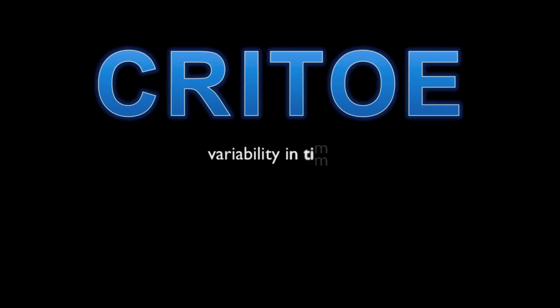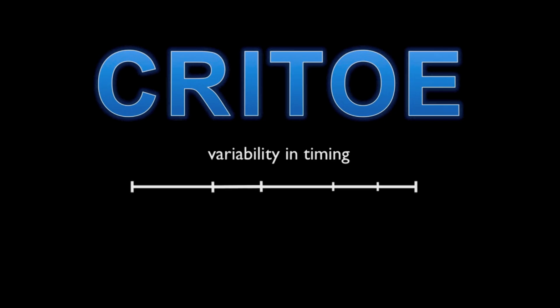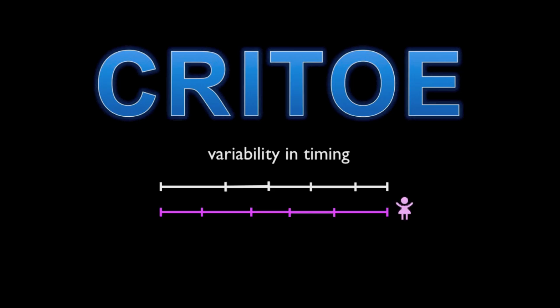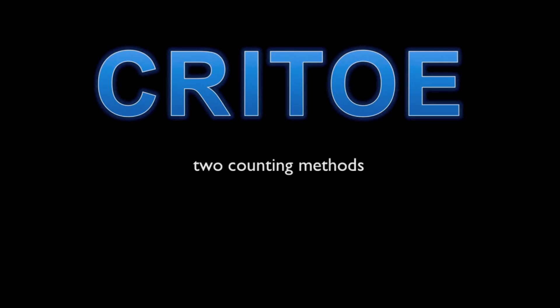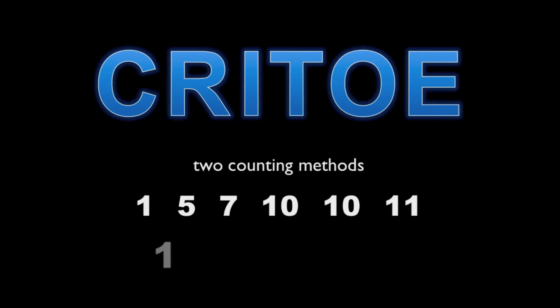There is however great variability in the timing of the ossification centre appearances. If we imagine them on a timeline throughout childhood, the age range can be quite dramatic. In particular there is a marked sex difference, with girls developing their ossification centres up to two years in advance of boys. Despite this timing variability, it is worth having a rough idea at what ages the ossification centres appear. There are two common counting methods: the more reliable are the ages 1, 5, 7, 10, 10, 11, and the simpler method to remember is 1, 3, 5, 7, 9, 11. Since there is such variability, we're going to use the simple version.